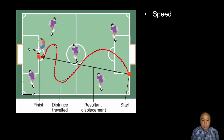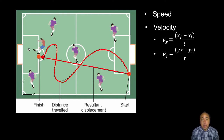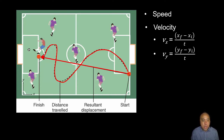We can extend this to the change in position over time. The rate at which someone changes their position over time is known as speed — that's the magnitude. The vector equivalent is known as velocity, because that is a change in magnitude and/or direction of position over time. We can describe velocity in both the X and Y directions if we have a coordinate system attached to the field.